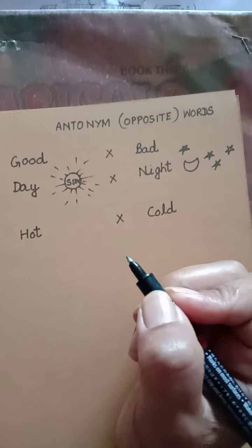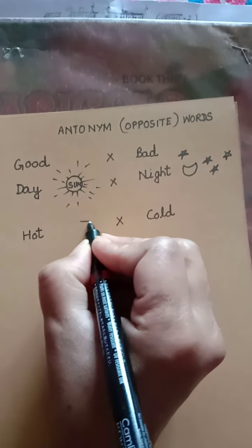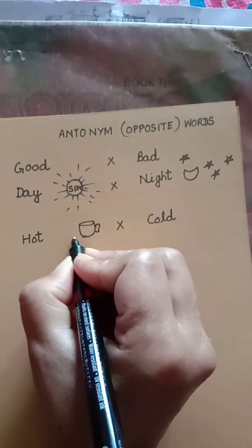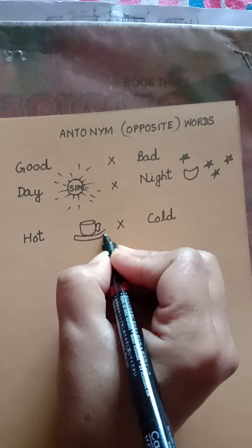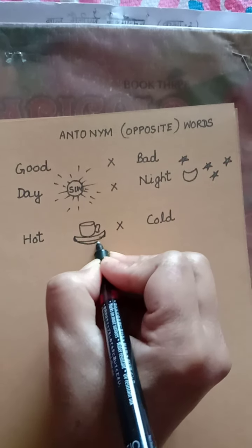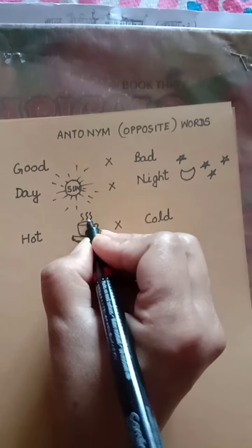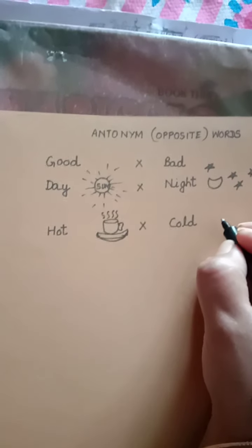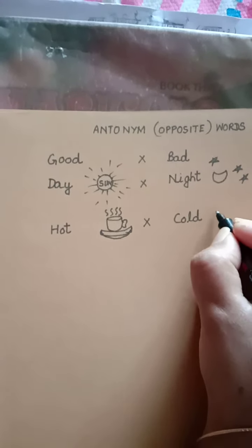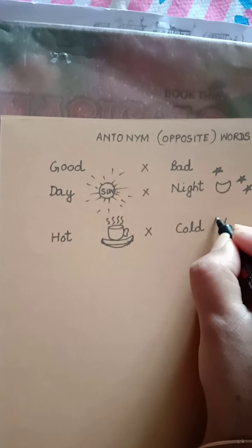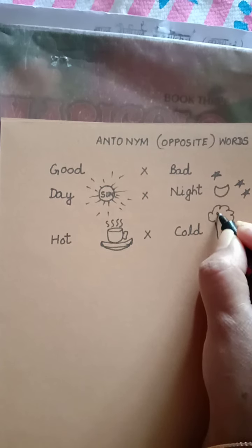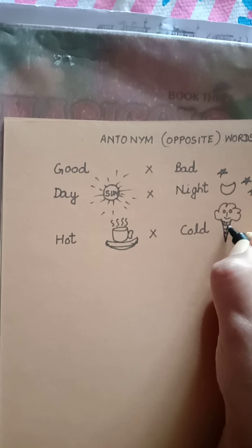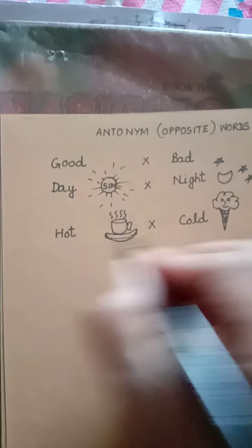Give an example of a hot thing. We can say hot tea in a cup. Here is a cup of tea with vapors coming out of it because it is hot. And give an example of a cold thing — all of you know, you like to eat it — yes, ice cream! So, the opposite of hot is cold. Ice cream is cold and tea is hot.